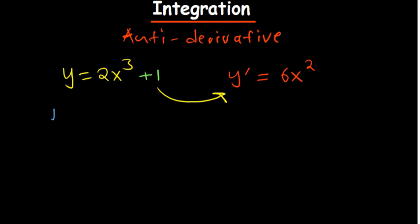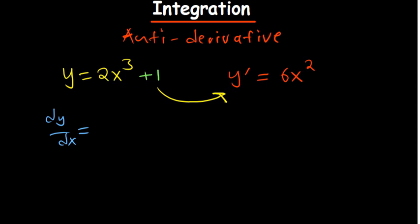The opposite — where you need to reverse back — is what we call integration. According to the power rule, when finding dy/dx for 2x³, the first thing is to multiply 3 times 2. Then reduce the power by 1: 3 minus 1 gives the power of 2. So the derivative is 6x². The constant disappears.